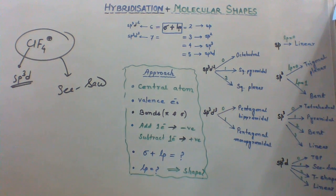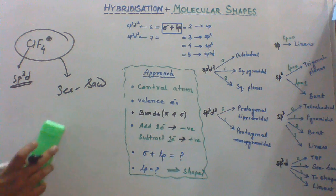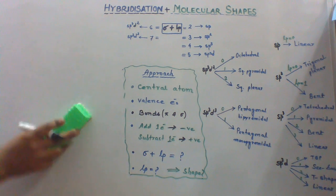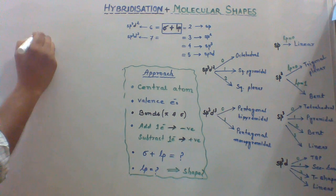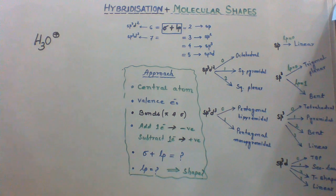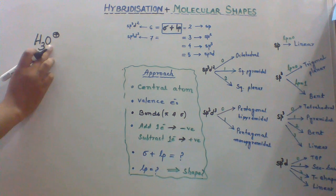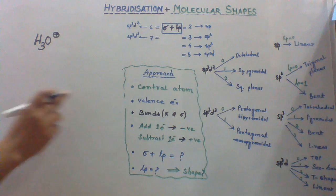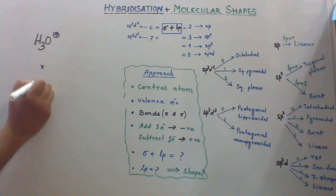So very easily we could find these two. Now let's take another example. H3O plus. This is hydronium ion. The central atom here is oxygen. Oxygen has 6 valence electrons. So we are going to put 6x.